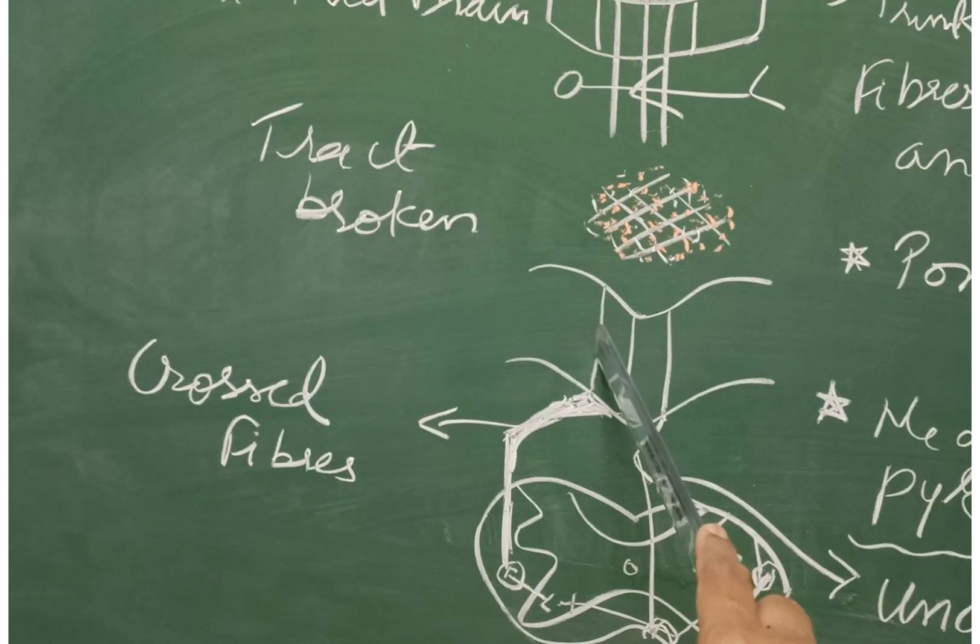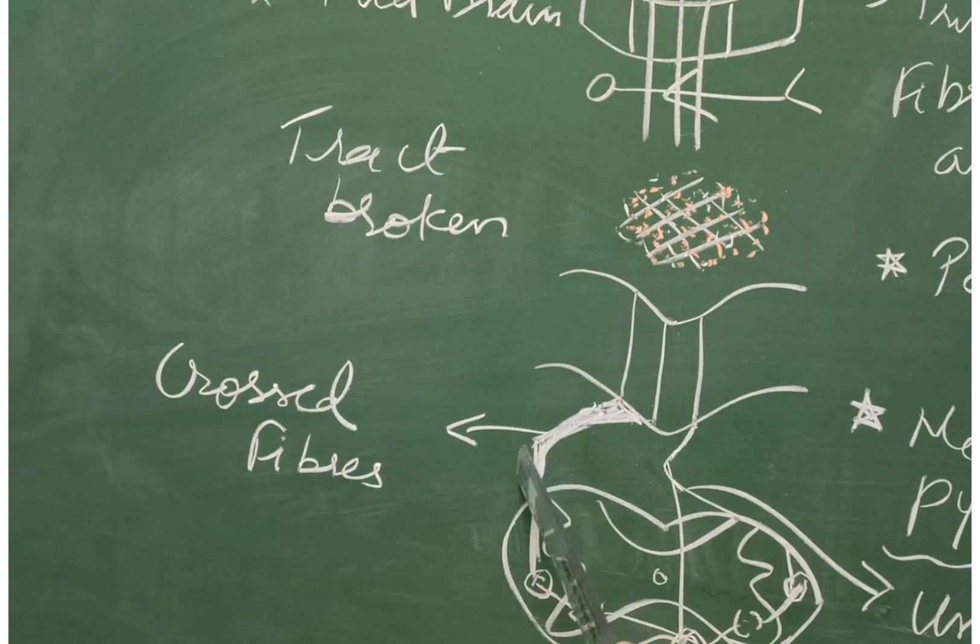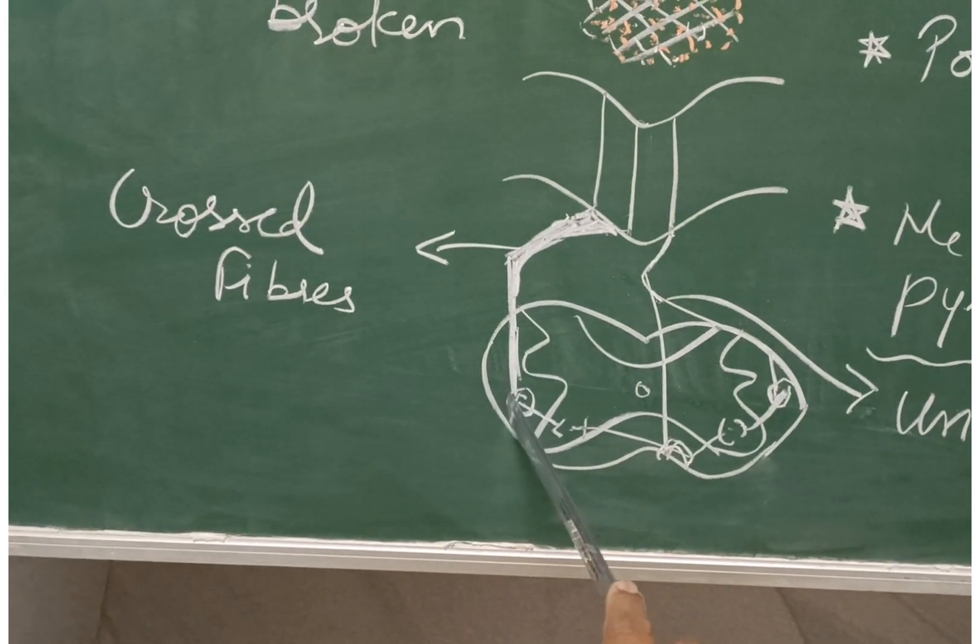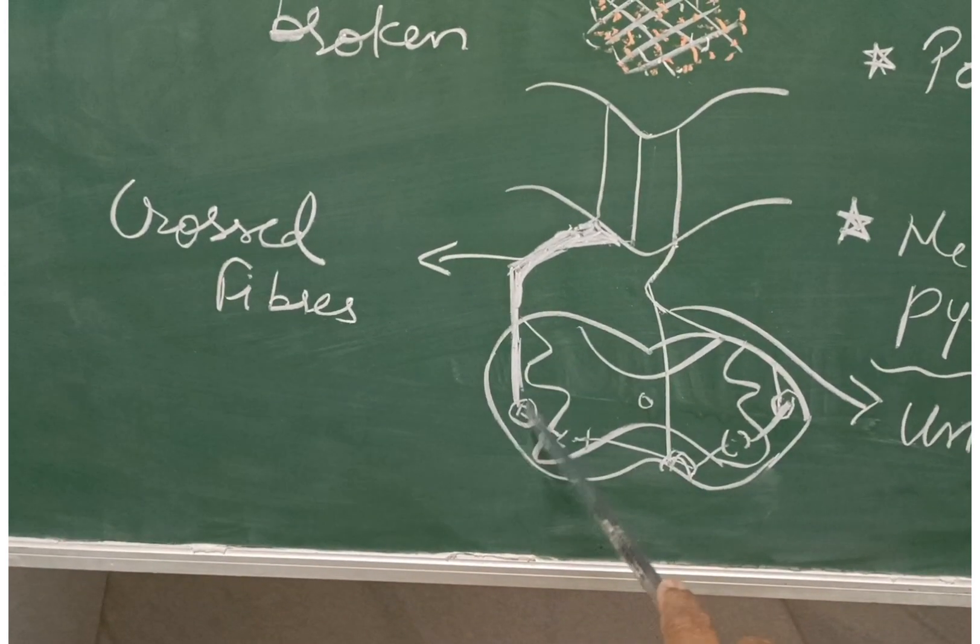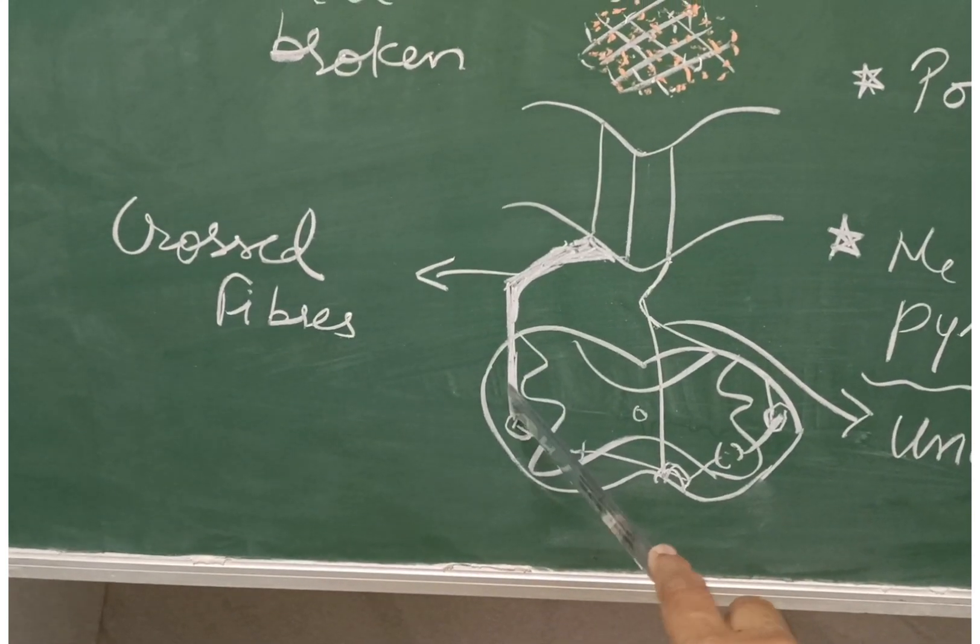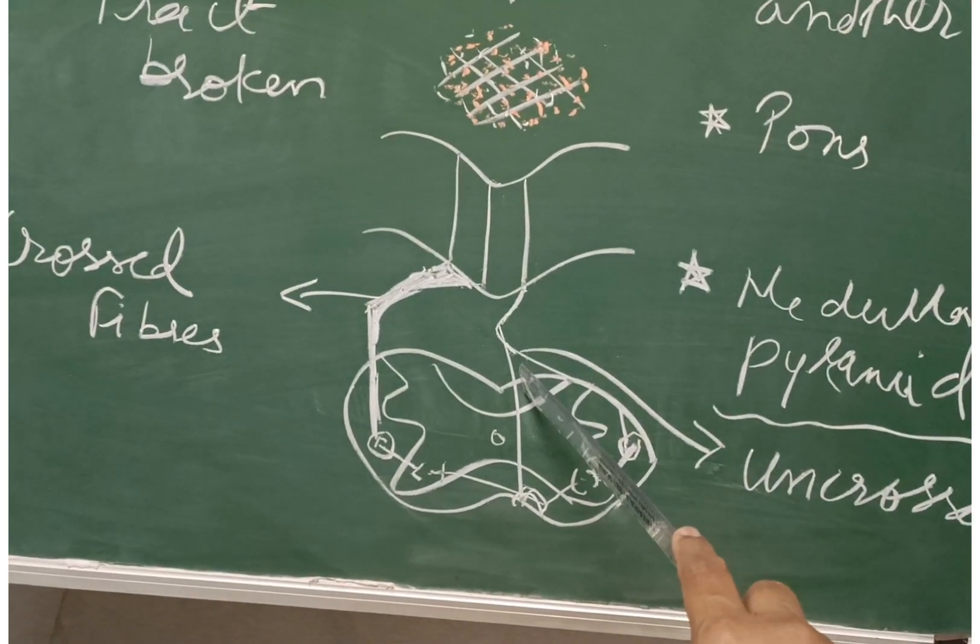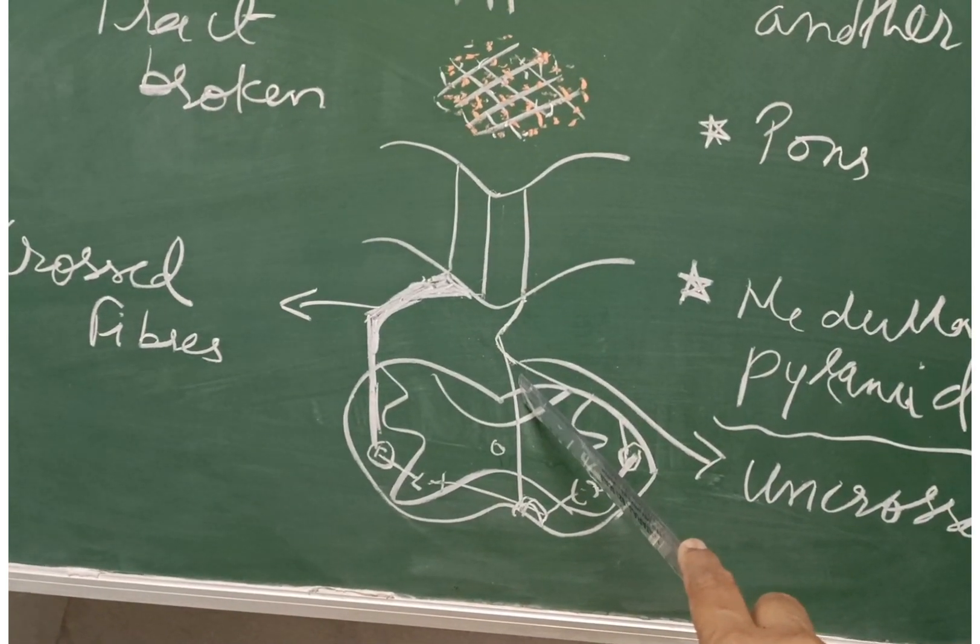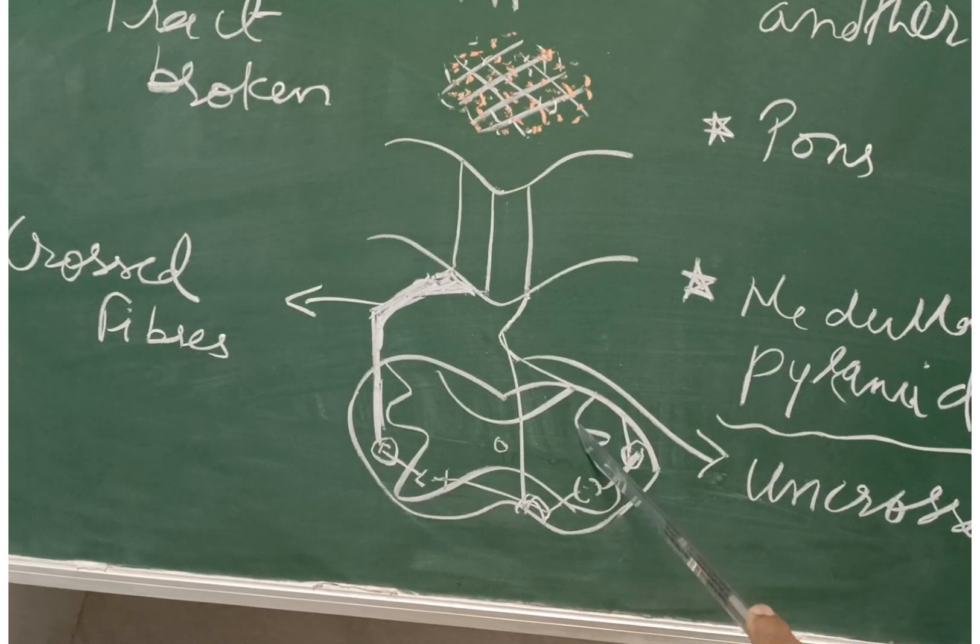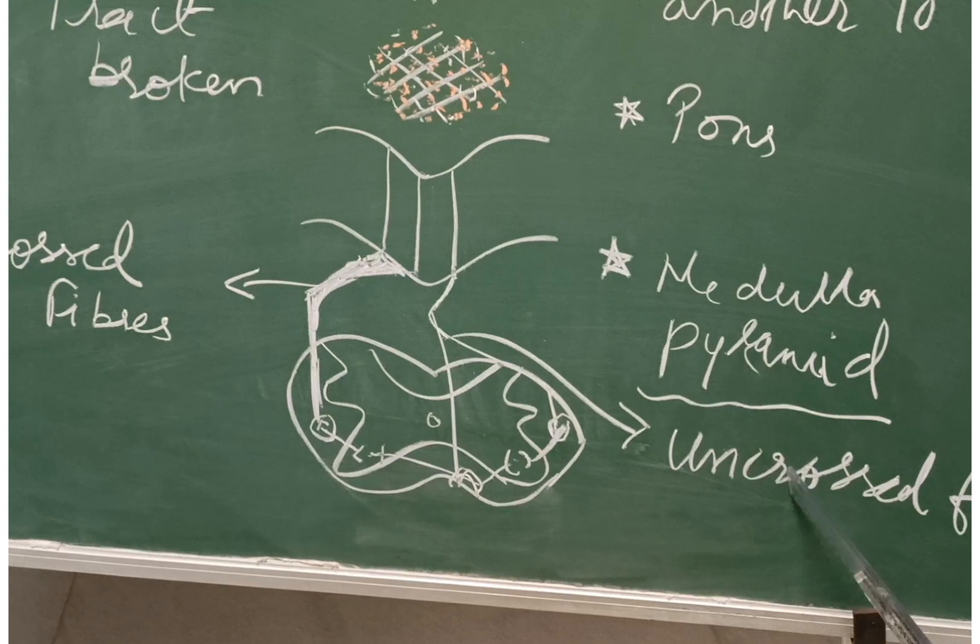Below this level, 80% of the fibers cross to the opposite side and form crossed lateral pyramidal tract. While remaining 20% of the fibers remain uncrossed and form uncrossed anterior corticospinal tract or pyramidal tract and uncrossed lateral corticospinal tract.